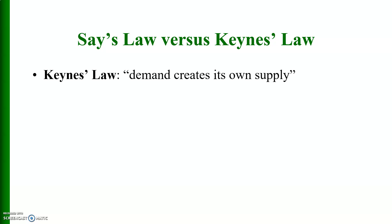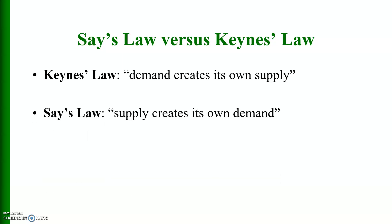Say's Law versus Keynes' Law: Keynes' Law states that demand creates its own supply, whereas Say's Law states that supply creates its own demand. Keynesian economics emphasizes the importance of aggregate demand in determining GDP and economic activity, while new classical economists emphasize Say's Law and the role of the aggregate supply curve in determining output and GDP.